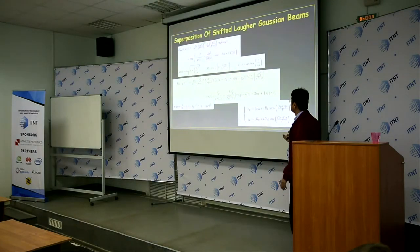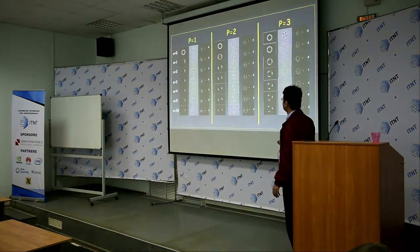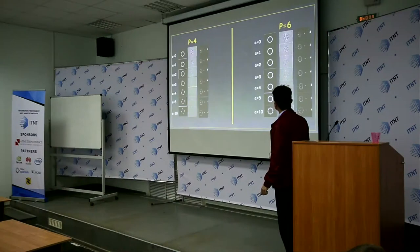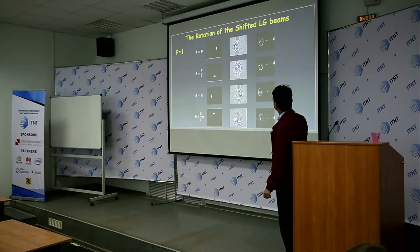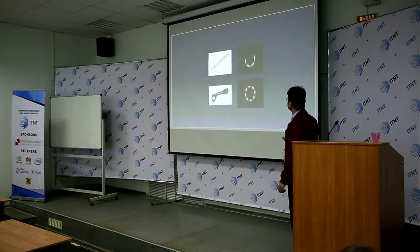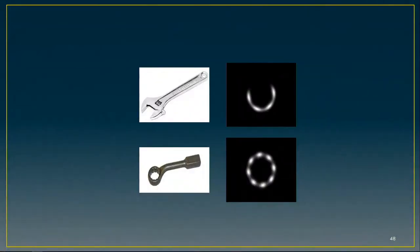Here we have analytical simulations and also experimental results — this is the amplitude, this is the phase — in different engineered cases. These types of optical manipulation may be used — as I said — for trapping a particle, getting a particle, rotating the particle, and transferring particles from one point to another.